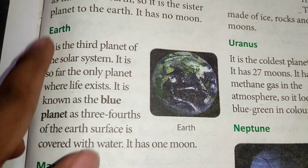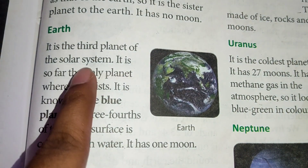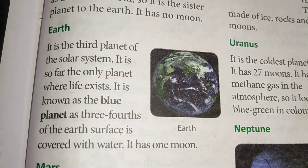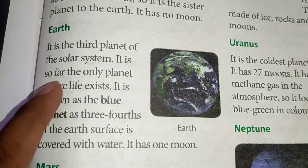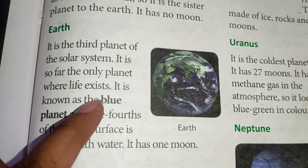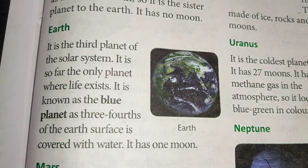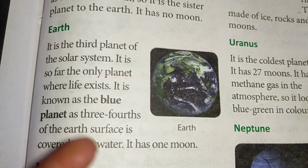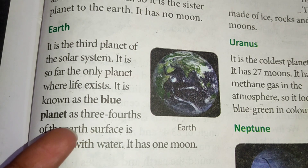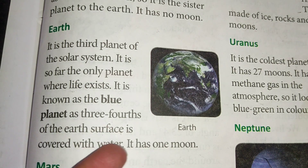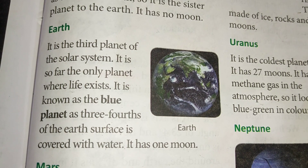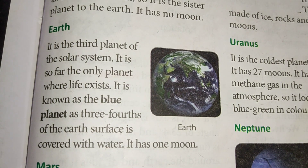Now the third planet is Earth. It is the third planet of the solar system. As three-fourths of the Earth's surface is covered with water, it is known as the blue planet.